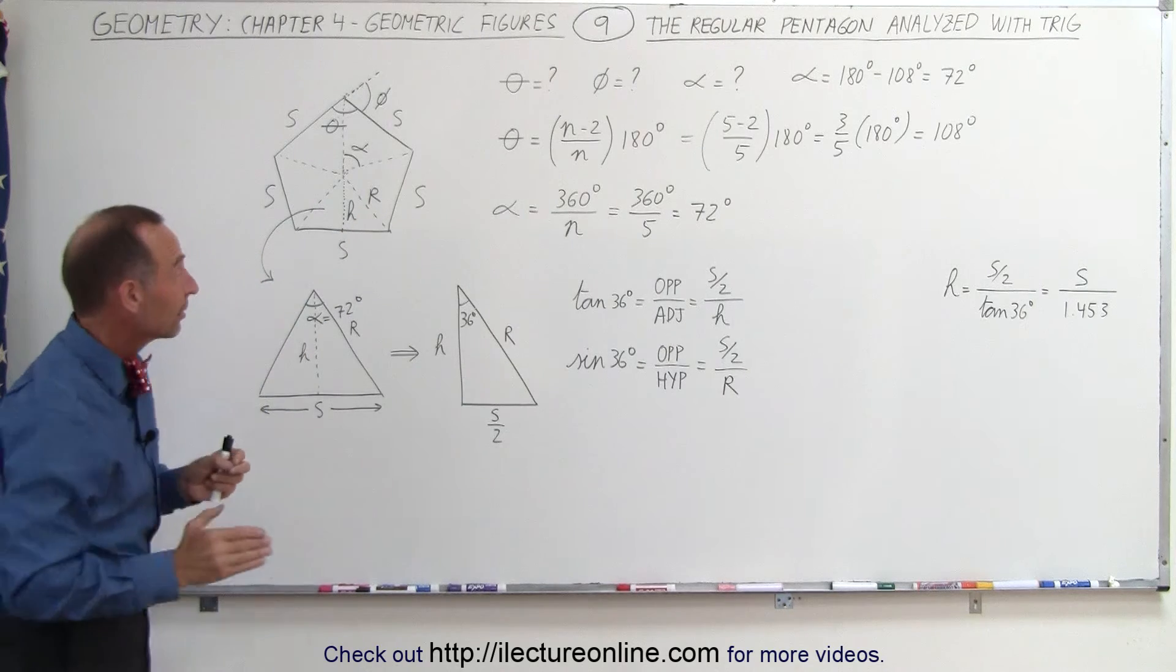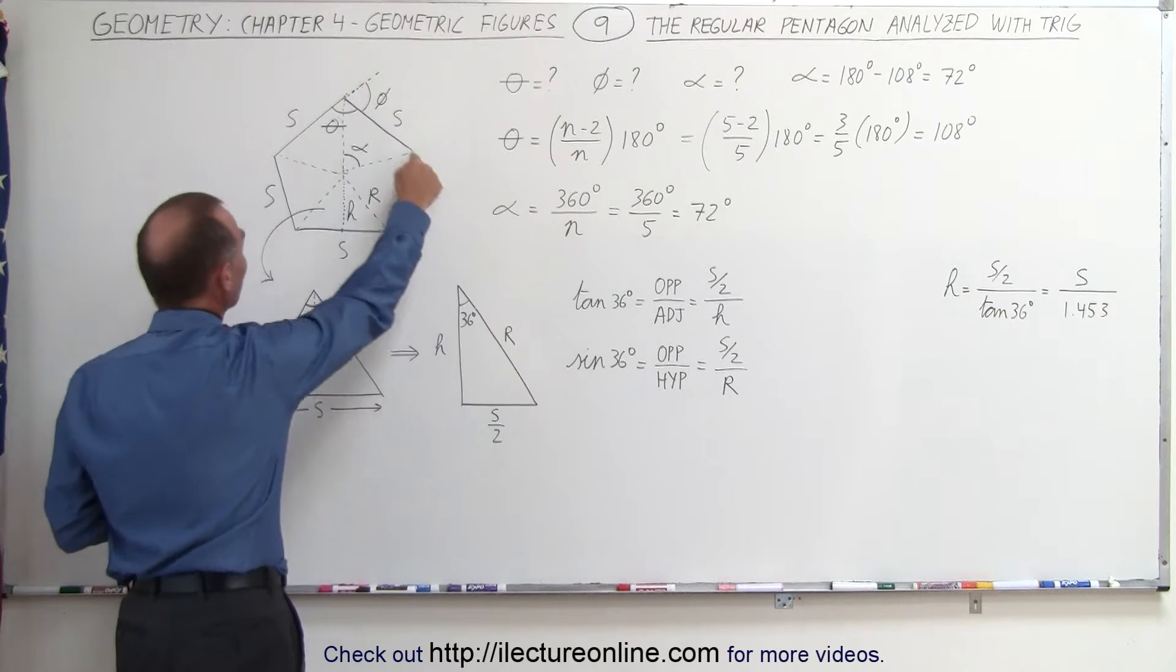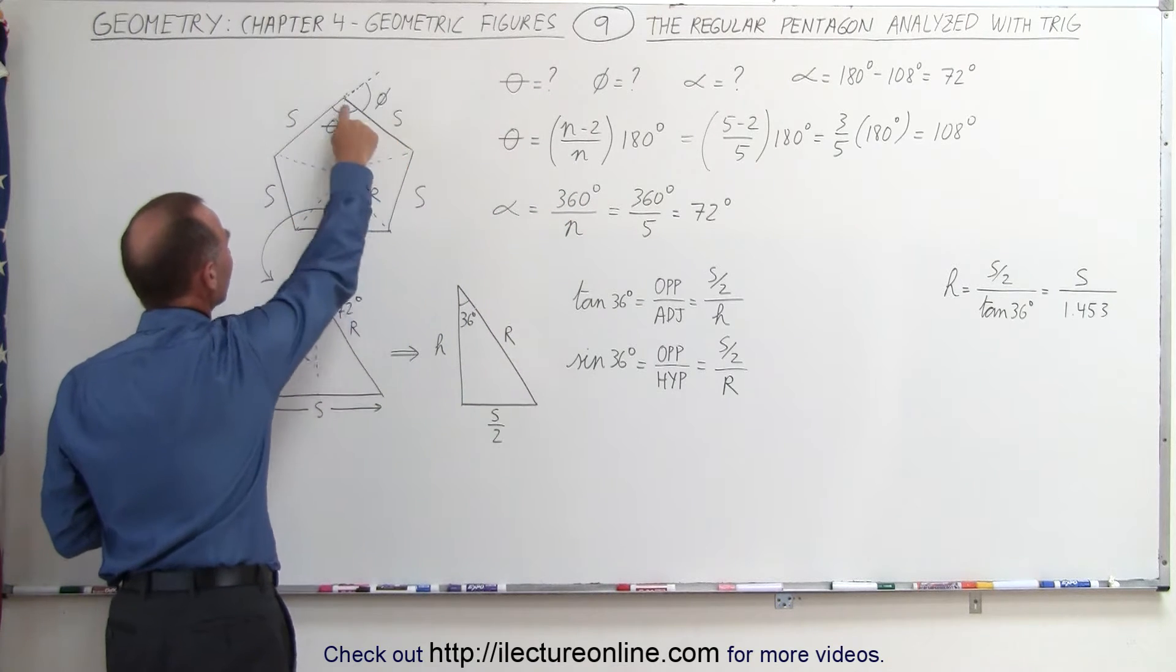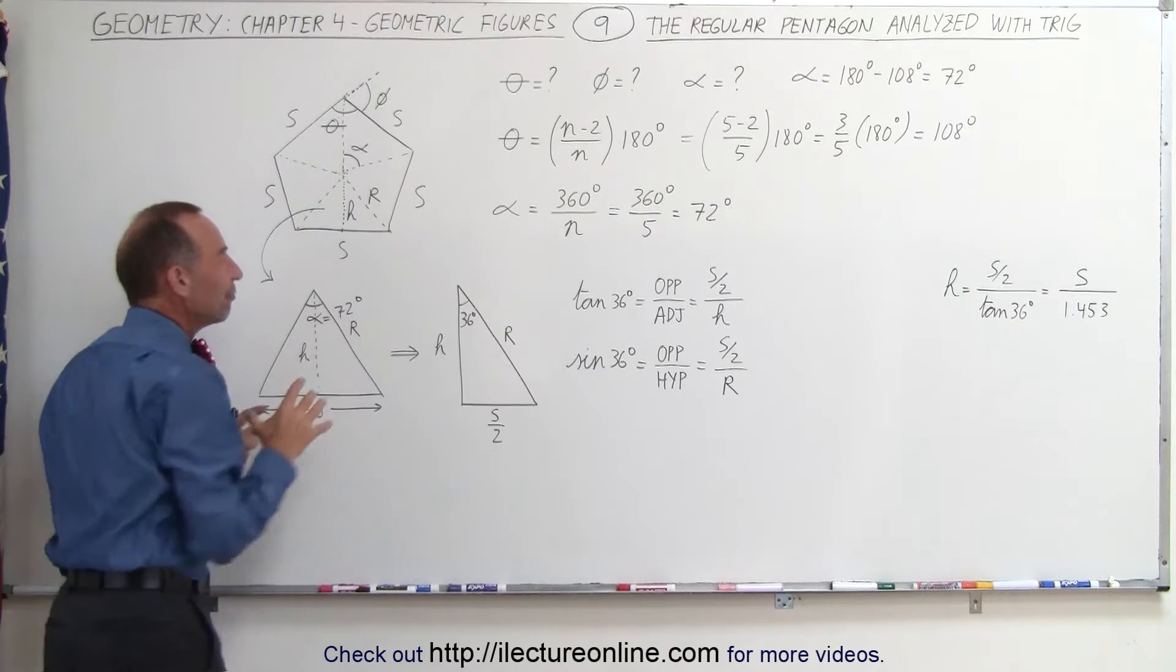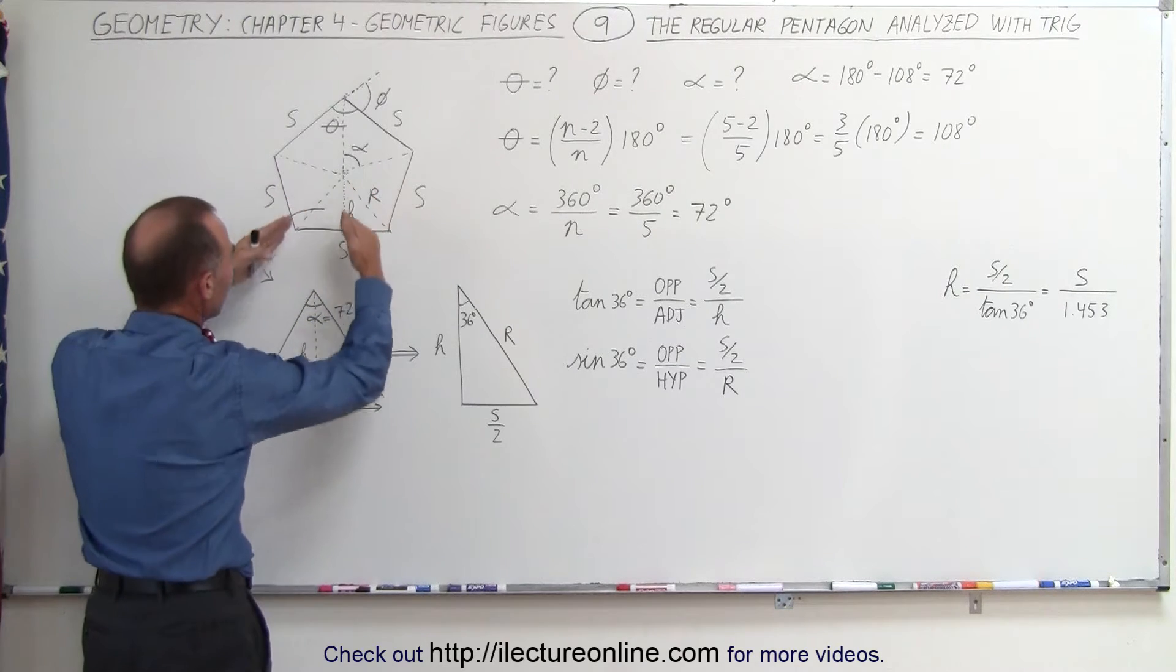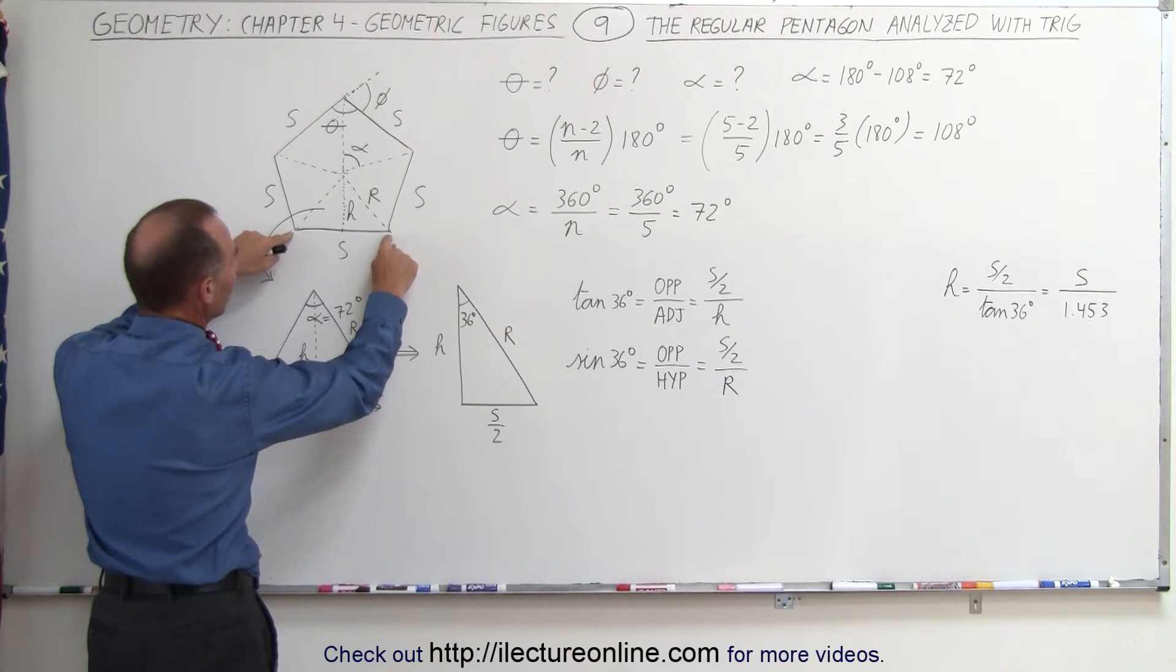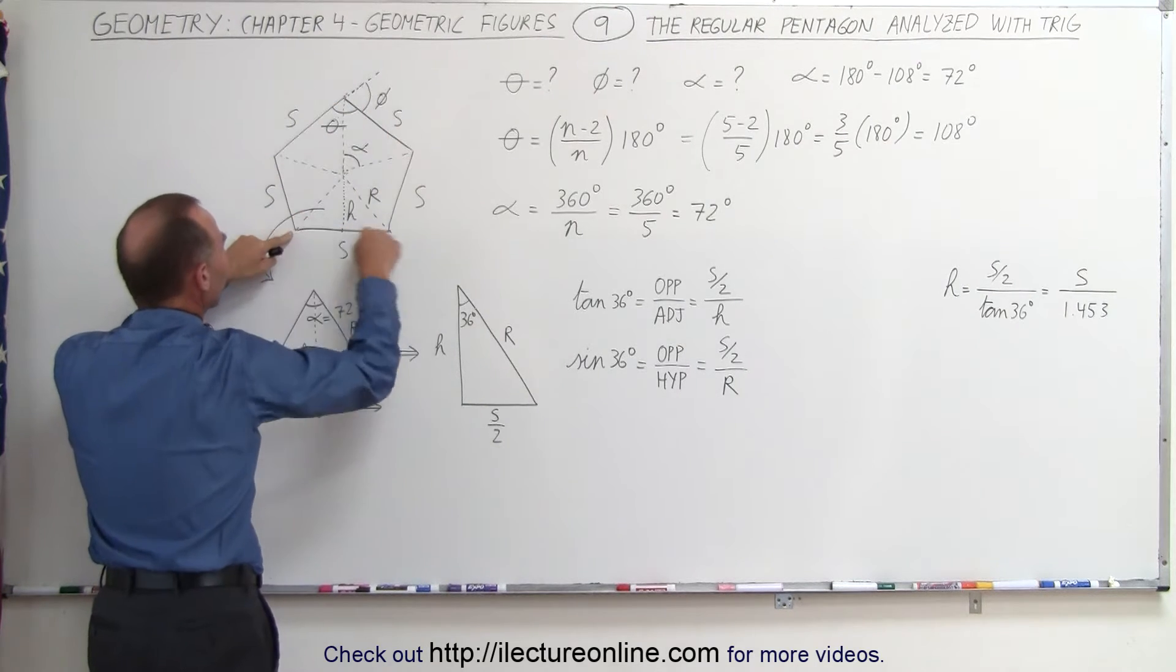Now what we've done here, we've left up on the board what we had on the previous video. Here we have the regular pentagon, and notice we can divide the regular pentagon into five equal triangles. If we take each one of those triangles like this and we draw it, we can see that this is the base of the triangle, which is equal to the side of the regular pentagon.